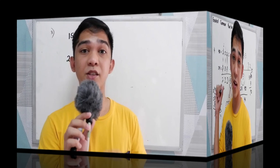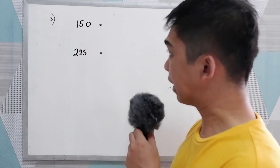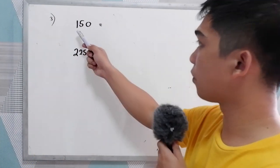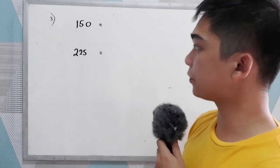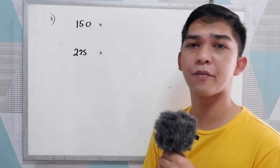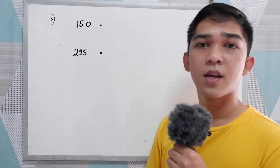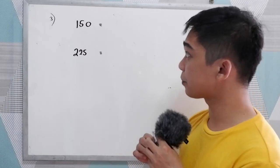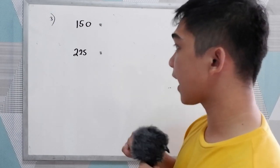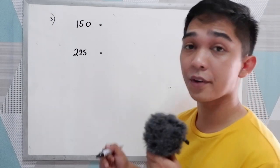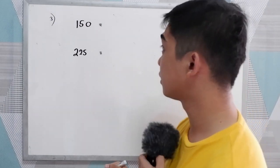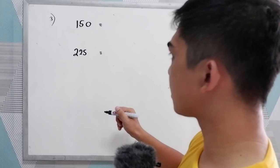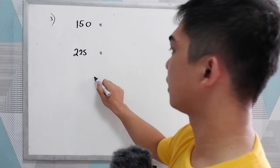Our third example: find the greatest common factor of 150 and 225. Let us find the prime factors of 150 and 225 using the decomposition method.